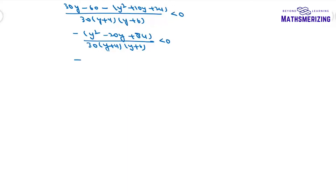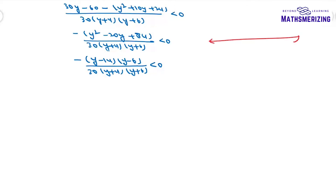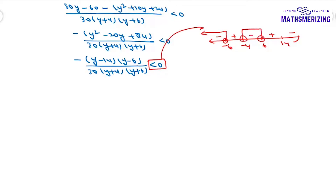Factoring the numerator I can write it as -1 times (y - 14)(y - 6), divided by 30(y + 4)(y + 6), less than 0. Now if I take a number line and mark all the points: -6, -4, 6, and 14. The sign of the rightmost interval is minus, so alternating: minus, plus, minus, plus, minus. We need less than 0 which is minus.